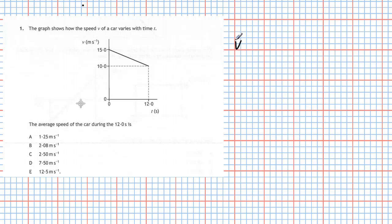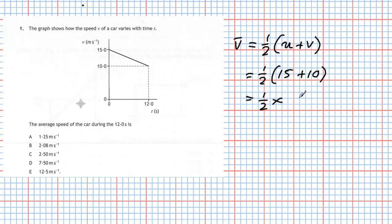The average speed v-bar is equal to one half of the starting speed plus the final speed — that's the basic equation. Plugging in the numbers, we get one half of the starting speed, which is 15 meters per second, plus the final speed, which is 10 meters per second. That gives us one half times 25, so our average speed is 12.5 meters per second, giving us answer E in the multiple choice.